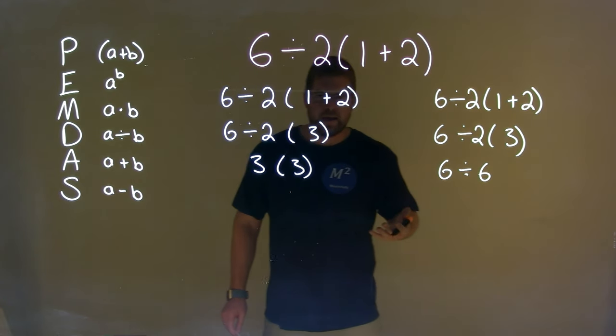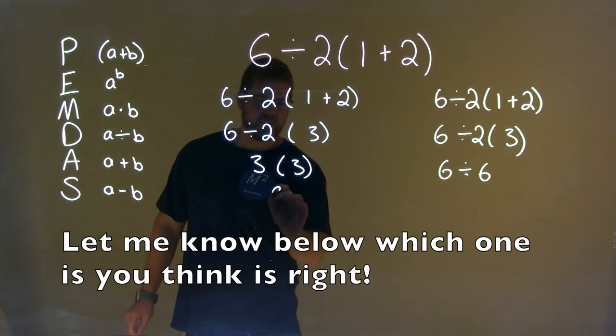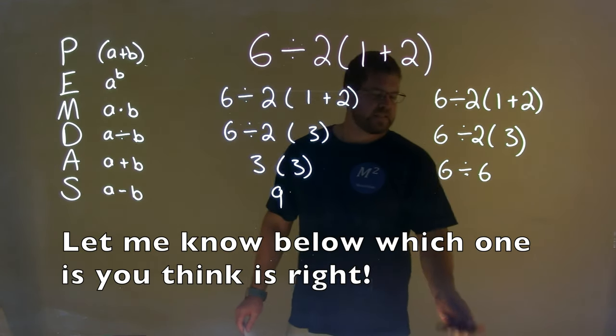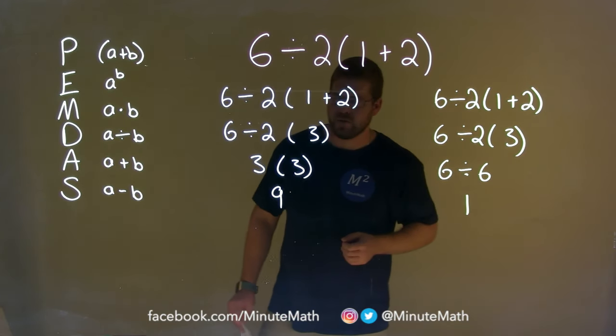So, where are you right now? We can finish this out. Three times three is nine. And six divided by six is one. And now we have two answers.